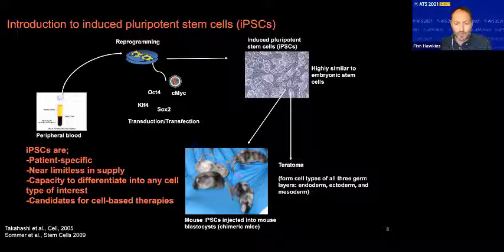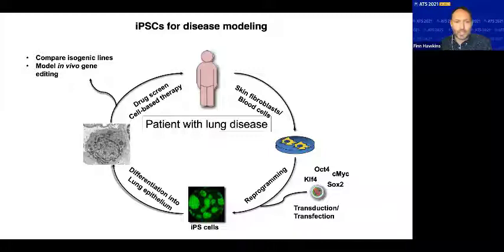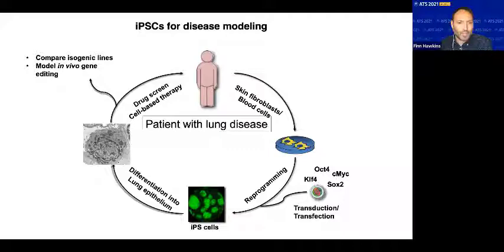This technology gives rise to the overall schematic for using these cells in lung disease: we can generate iPSC cells from any patient of interest with an acquired or genetic lung disease, and generate a near limitless supply of those cells for downstream studies. If we could differentiate those cells into lung cell types of interest, we could perform disease modeling, drug screens, and possibly eventually have a cell-based therapy.